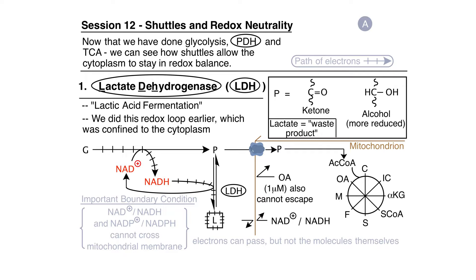What happens to the lactate that's produced? In a working muscle cell, that lactate will escape from the cell, go into the blood, and then go to the liver or another organ capable of gluconeogenesis. Gluconeogenesis is a pathway by which non-carbohydrate precursors such as lactate are built back up into glucose. Keep that working muscle scenario in mind, because I'll come back to it when I discuss physiological responses to stress — the fight-and-flight scenario. That's all I'll say for now about the lactate dehydrogenase shuttle, the first of the three pathways maintaining redox neutrality in the cytoplasm.